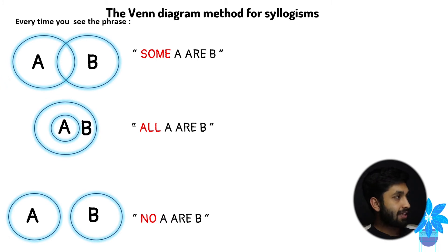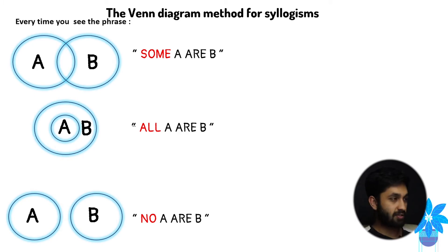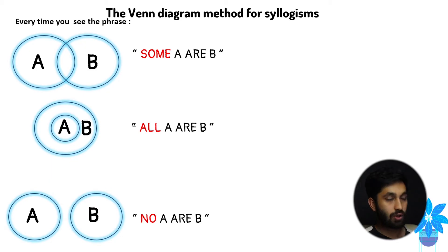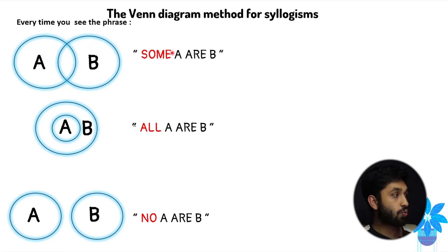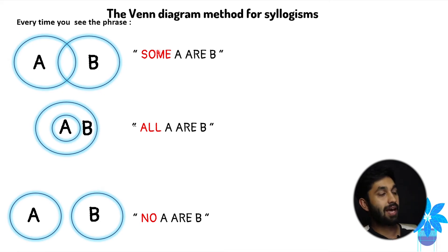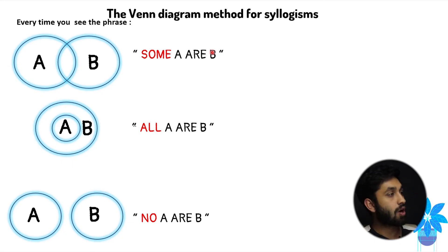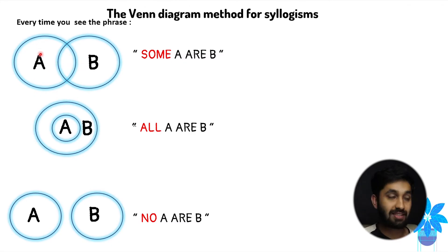In the exam you will see these phrases: some A are B, all A are B, and no A are B. These are very typical common phrases you'll find within syllogisms. For the first phrase — some A are B — every time you see the keyword 'some' you want to draw the two circles overlapping each other. A and B can be replaced with whatever objects. One circle representing A.